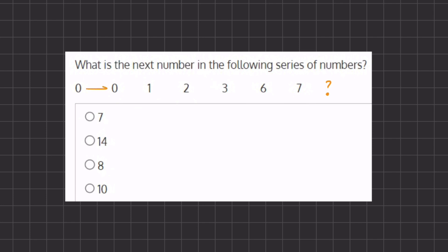Moving from 0 to 0, we add 0. Moving from 0 to 1, we add 1. From 1 to 2, we add 1. From 2 to 3, we add 1. From 3 to 6, we add 3. And from 6 to 7, we add 1.